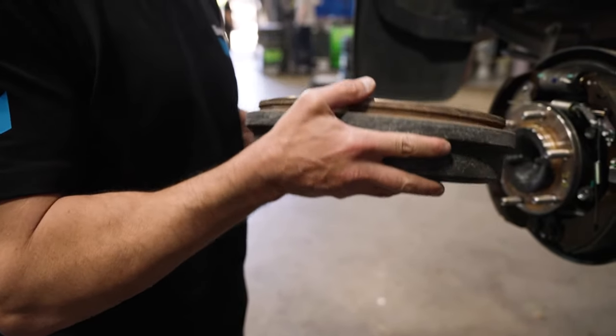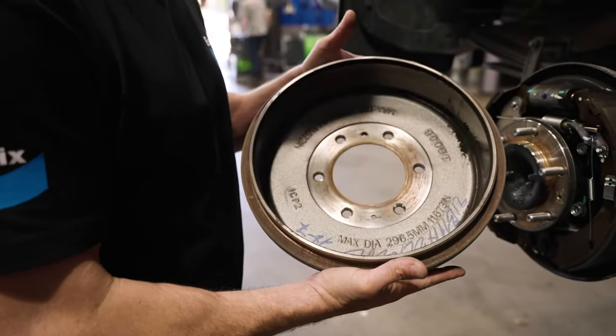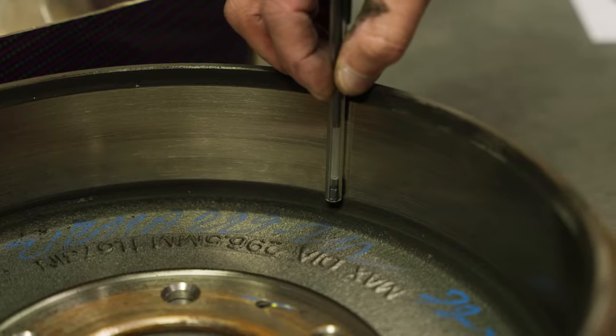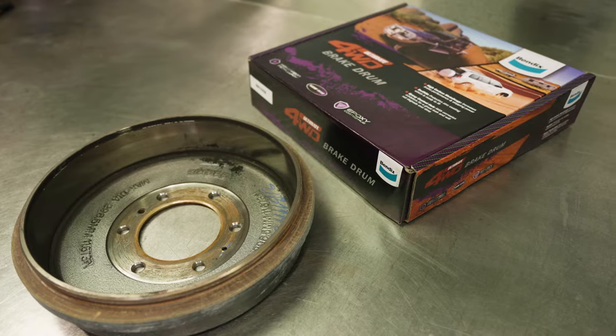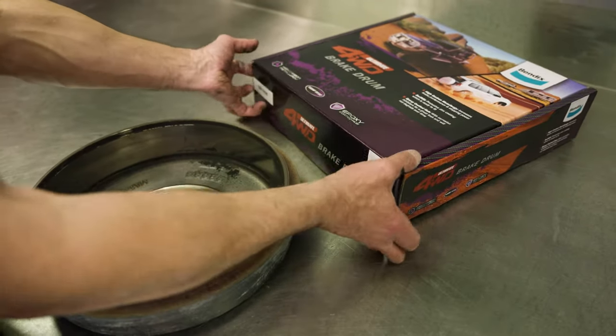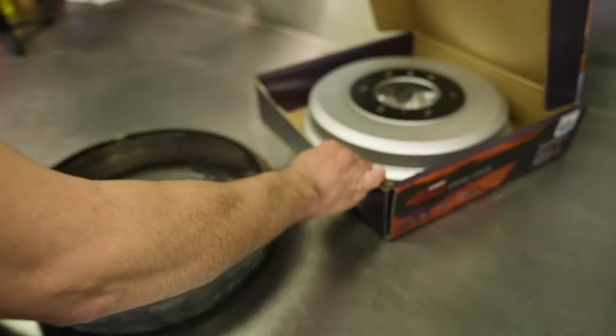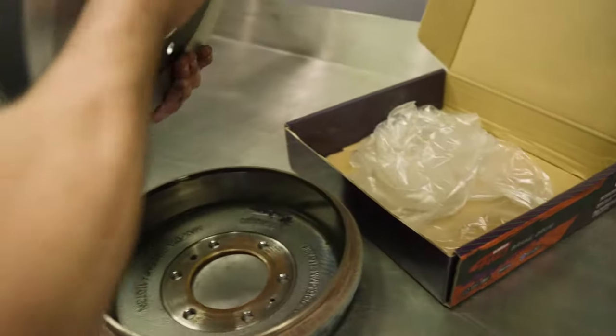Next, have a look at the brake drums. It's always a good idea to have them machined as part of every brake service. Brake drums are marked with their maximum allowable inside diameter and should never be machined beyond this limit. Once the limit's been reached, you'll need to replace the brake drum. In this case, replace them with new brake drums.